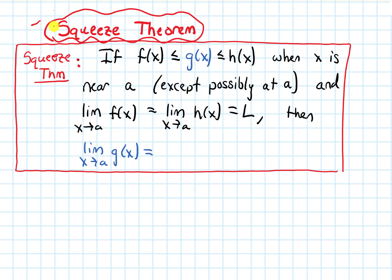In this video, we will talk about the squeeze theorem. The statement says that if f(x) ≤ g(x) ≤ h(x) when x is near a — where a is some number — so this chain of inequalities has to be true near a, except possibly at a. And if the limit as x approaches a of f(x) equals the limit as x approaches a of h(x) — call it L — then the limit as x approaches a of g(x), the middle function, equals L as well.